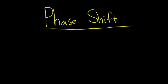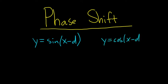So here we're going to talk about the phase shift for sine and cosine. We have y equals sine of x minus d, and then we have y equals cosine of x minus d. In this case, we're going to say that d is called the phase shift. Basically, this is just a horizontal translation or transformation or shift.